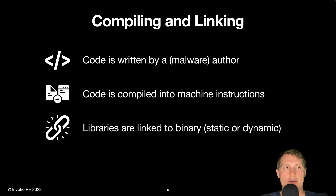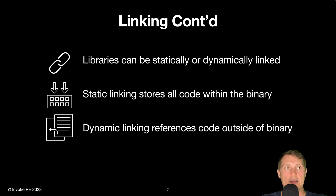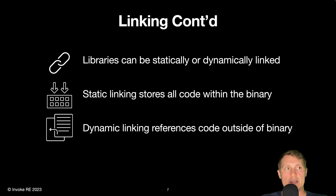During the malware development process, malware authors will write code to carry out malicious operations. This code is provided to a compiler, which turns the source code into machine instructions and stores the required data to execute the program in a binary file format, which in this case is the PE format. Library dependencies are statically or dynamically linked in order to include external code, or references to external code where required. Static linking will embed given library source code or library binary code into a final binary, which greatly increases the size of the binary and makes reverse engineering more difficult as the code needs to be identified by the analyst within the statically linked binary.